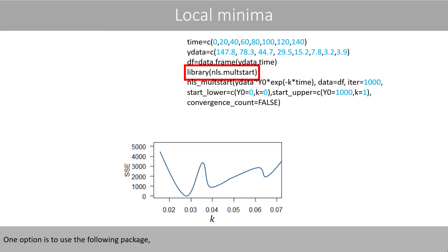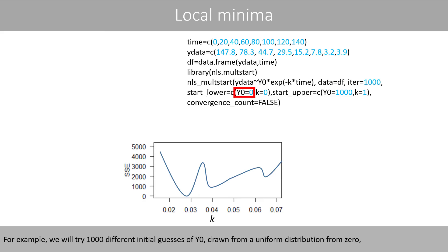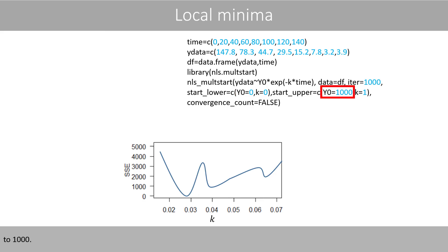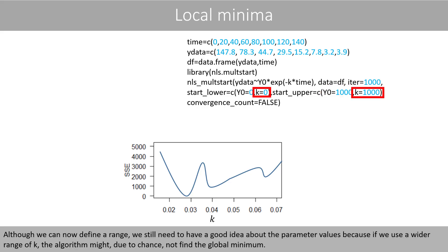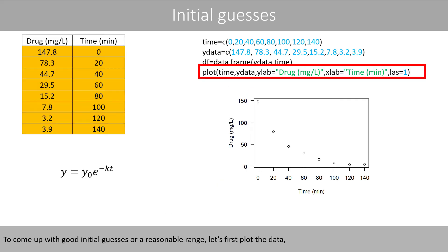One option is to use a dedicated package where we can try, for example, 1,000 different sets of parameter values drawn from a uniform distribution in given ranges — for instance, 1,000 different initial guesses of y0 drawn from a uniform distribution from 0 to 1,000. Although we can now define a range, we still need a good idea about the parameter values, because if we use too wide a range of k, the method might not find the global minimum. It is therefore good to have some idea about the reasonable range of initial values to try.